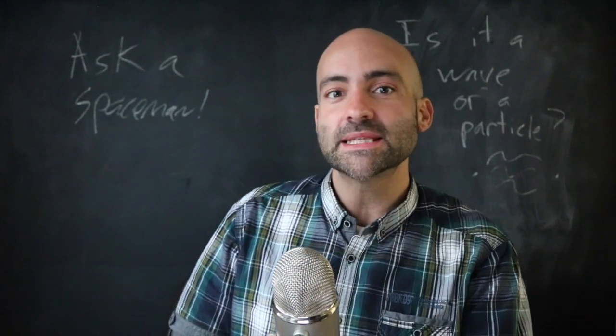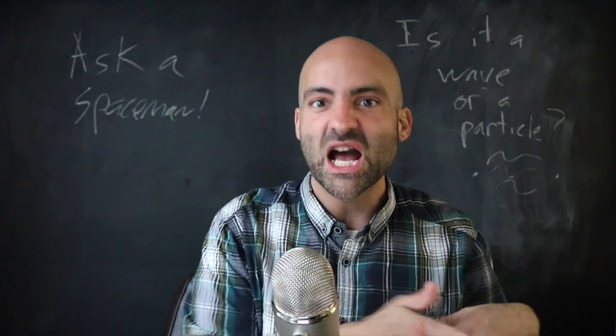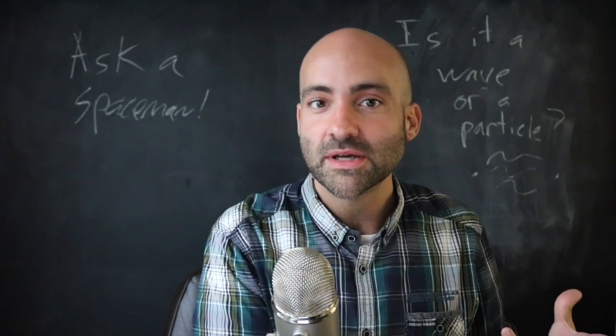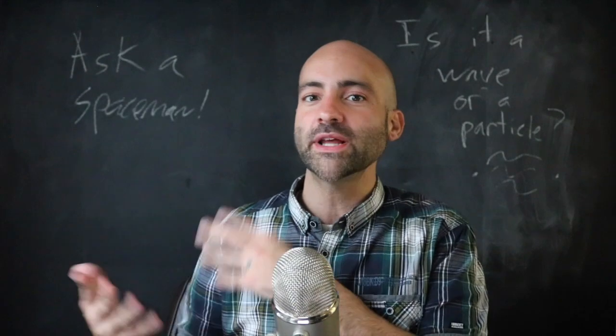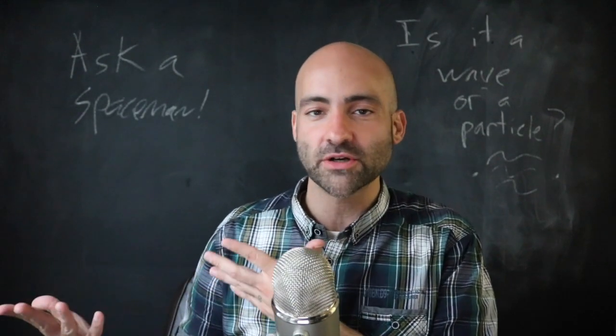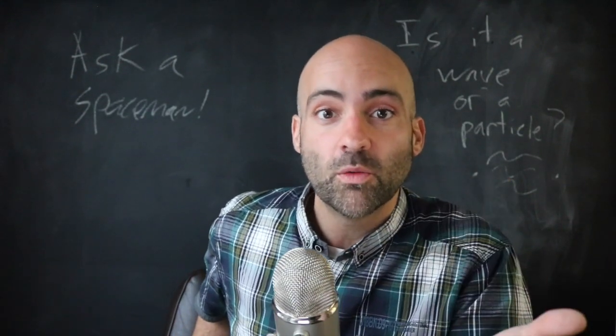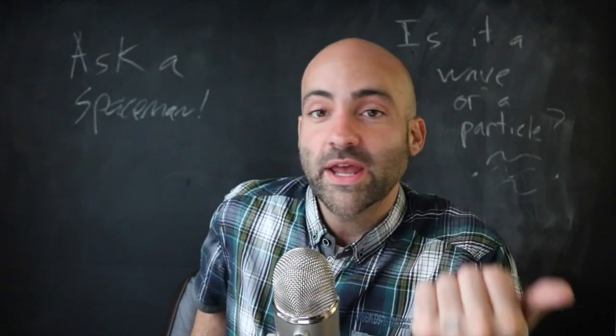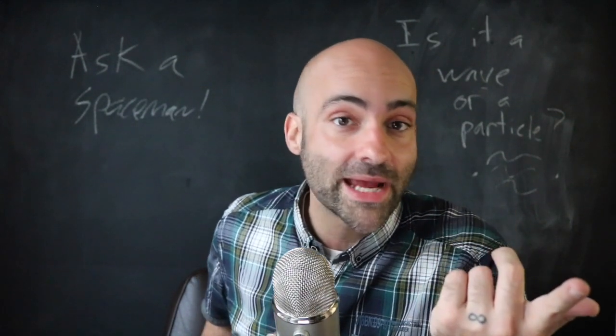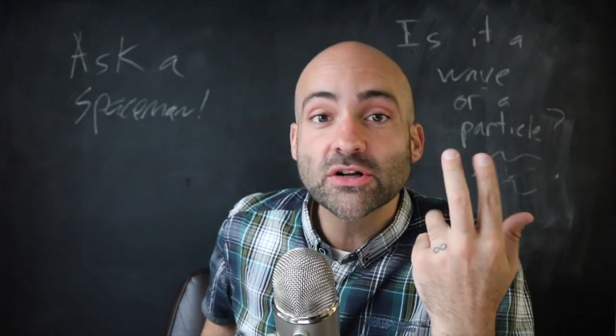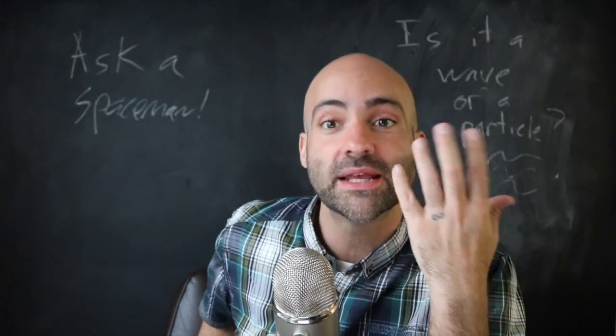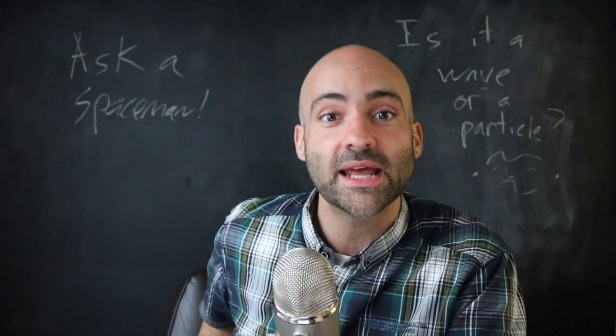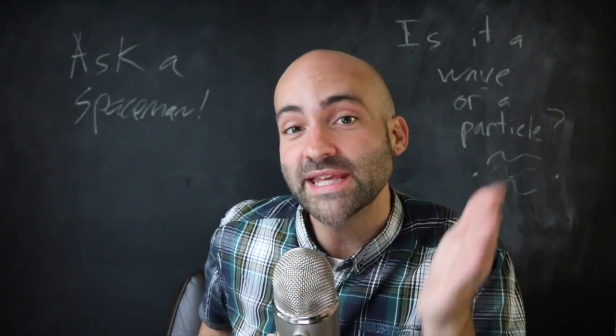Sometimes the chunky nature of light comes out more, and sometimes the wiggly wavy nature of light comes out more. It depends on the wavelength of light and what it's interacting with. It depends on the energy. It depends on how much light there is. It just depends. Is light a wave or a particle? Yes!